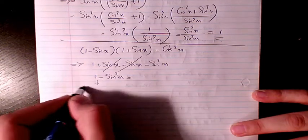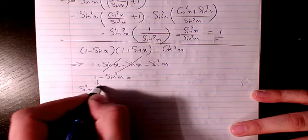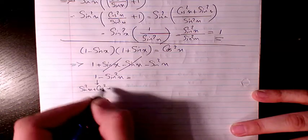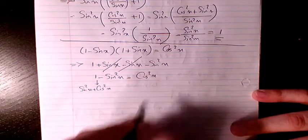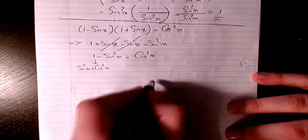As we know, 1 is sine squared x plus cosine squared x, so we have minus sine squared x, so the answer will be cosine squared x. That's how it's proven.